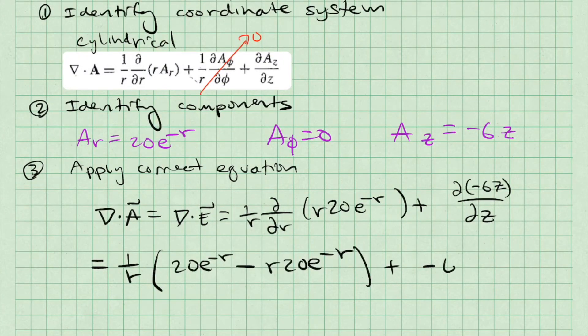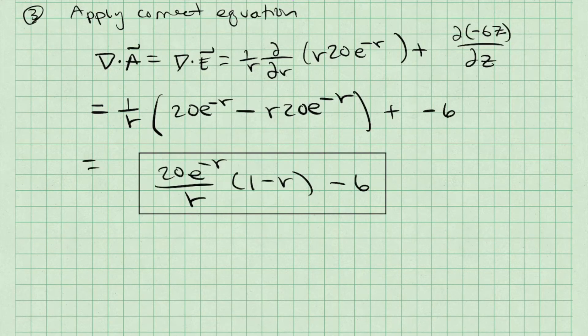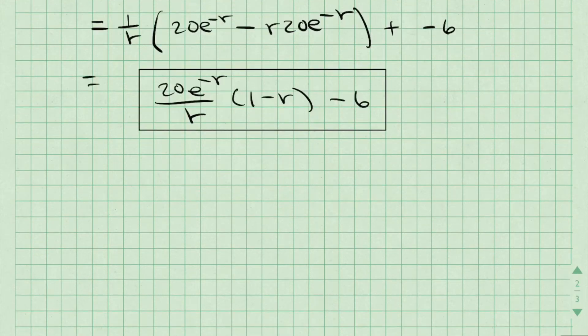Once we've done this, we can arrive at an answer for this example. 20 times e to the negative r all over r, multiplied by 1 minus r in parentheses, and then we're going to subtract 6 from that whole expression.